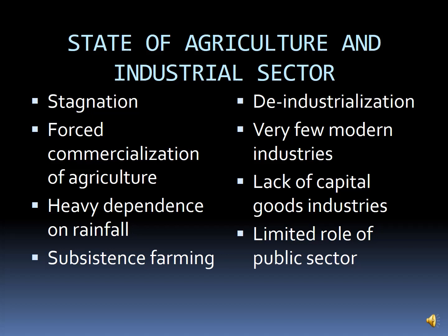Now we talk about the industrial sector. The industrial sector was suffering from de-industrialization — just the opposite of industrialization. The Britishers were not trying to develop more industries in our country because de-industrialization served a two-fold objective: number one, to reduce India to the status of a mere exporter of important raw materials; and second, to convert India into a market for the finished products of those same industries.